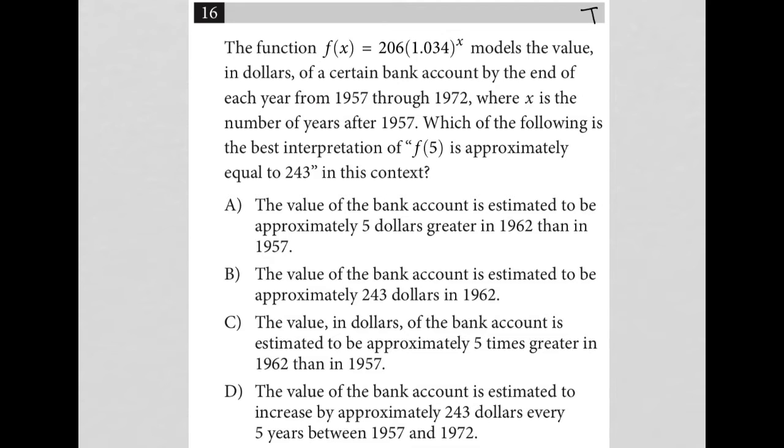This question looks like it's going to be a translate word problem question, so I'm going to do my best to translate what I read as I'm reading so that I don't have to go back and try to make sense of things at the end. The question says the function f(x) = 206(1.034)^x models the value in dollars of a certain bank account by the end of each year from 1957 through 1972, where x is the number of years after 1957.